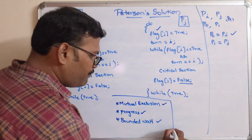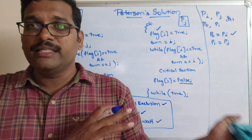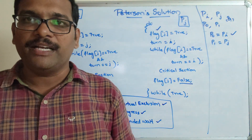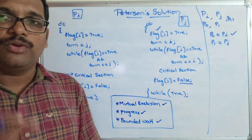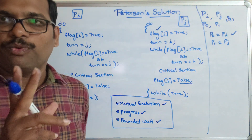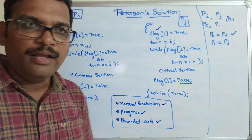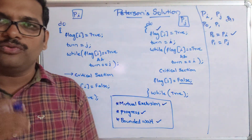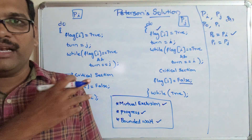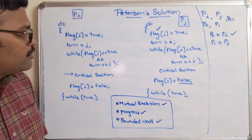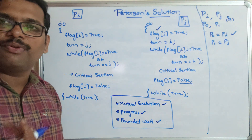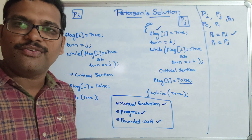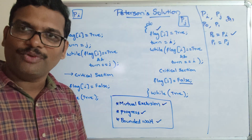So if these three conditions are satisfied, we can confirm it is a valid critical section solution. The Peterson solution is suitable when two processes want to share a common resource. I hope you understood. I'll post the critical section material in the description. If you have any doubts, feel free to post them in the comment section. If you enjoyed the session, like and share it with your friends, and don't forget to subscribe to our channel. Thanks for watching.